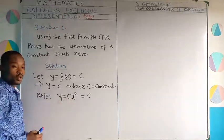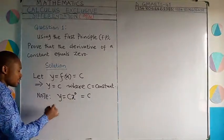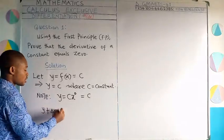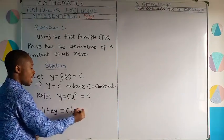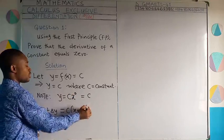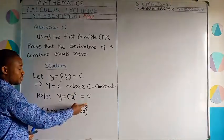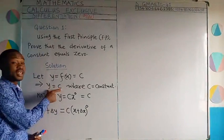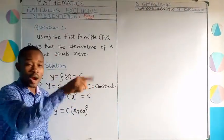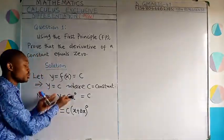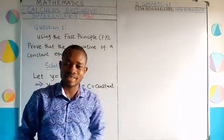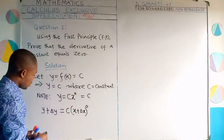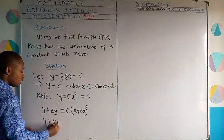A change in x will produce a change in y, represented by delta x and delta y. So we have y plus delta y equal to c times open bracket x plus delta x, raised to the power zero. This whole term in brackets raised to the power zero gives you one, so you have one times c. Therefore y plus delta y equals c.